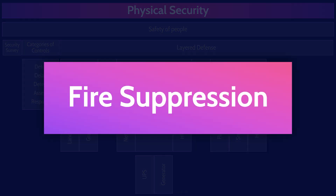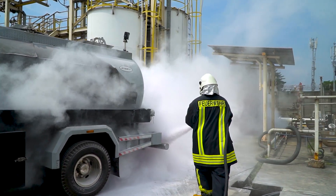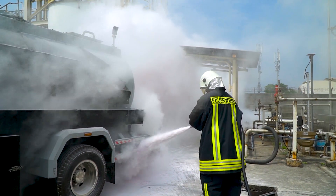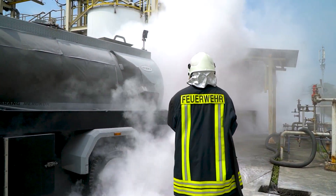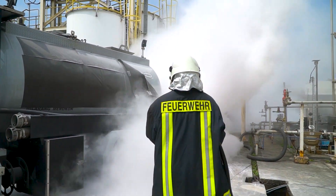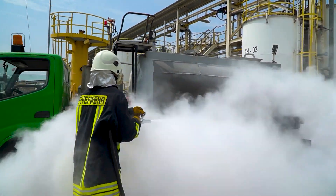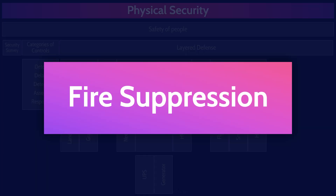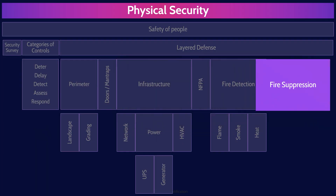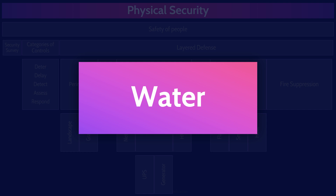Let's now talk about how we suppress a fire. There are two major types of systems: water-based and gas-based fire suppression systems. Water-based systems are cheaper than gas-based systems, but water and expensive electrical equipment in a data center is a terrible combination. So gas-based fire suppression systems are often cost justified in data centers. Water-based systems are common in office buildings, hotels, and other spaces where some water is not going to destroy millions of dollars worth of equipment.